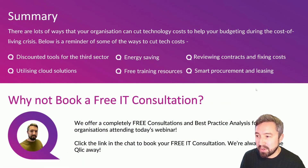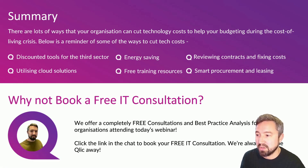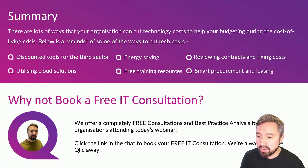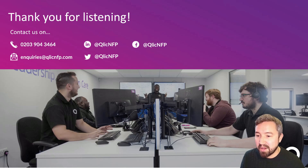That takes us to the end of the webinar and we will be doing a Q&A. There are lots of ways your organisation can cut your technology costs and help budgeting during the cost of living crisis. Please remember some of the ways we can cut costs: discounted tools for the third sector, energy saving, reviewing contracts and fixing costs, utilising cloud solutions, free training resources, and looking at smart procurement and leasing. If you want to know anything we've discussed today, we have a Q&A after this. You can also book yourself a free consultation with myself and one of my team — completely free for organisations attending today's webinar. We will provide you with information and advice on your current setup bespoke to you, and provide you with a report on how we can best look at cutting your costs and saving you money. There will be a link in the chat to book your consultation. Thank you for listening.